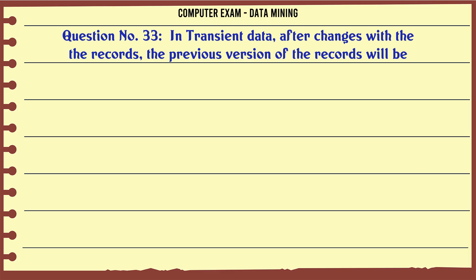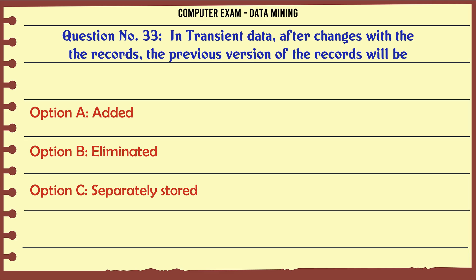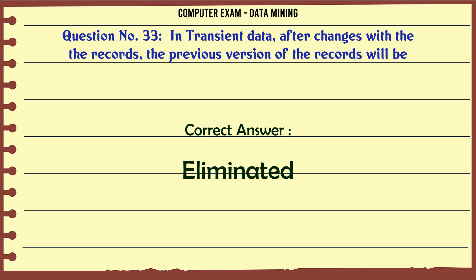In transient data, after changes with the other records, the previous version of the records will be: A. Added. B. Eliminated. C. Separately stored. D. Remain same. The correct answer is Eliminated.